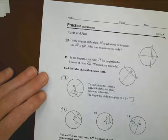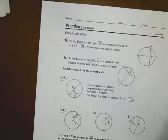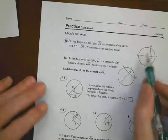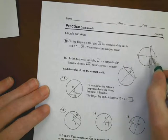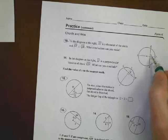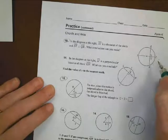All right. For number 10, what it says is in the diagram at the right, ST is the diameter of the circle and ST is perpendicular to QR. So this is the diameter and it's perpendicular to this point, which means I have right angles right there. And it wants to know what kind of conclusions can I make if that is true?